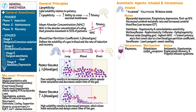Propofol infusion syndrome involves various toxicities through different mechanisms. Short-term high doses can cause metabolic acidosis from mitochondrial uncoupling. Prolonged infusions can interfere with fatty acid oxidation. High doses can cause rhabdomyolysis. Redistribution into fat cells can produce hypertriglyceridemia.